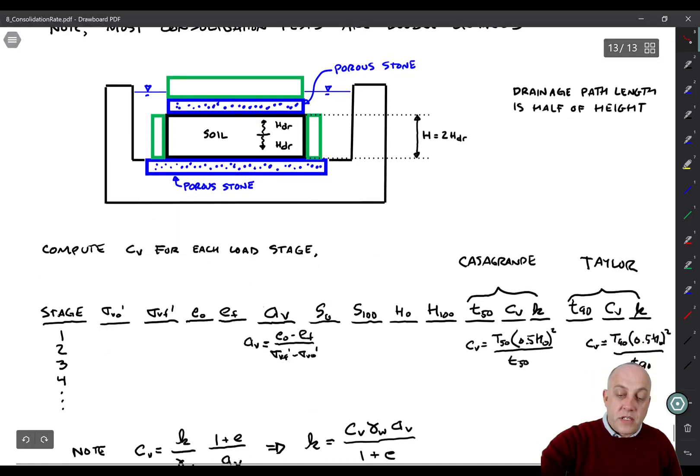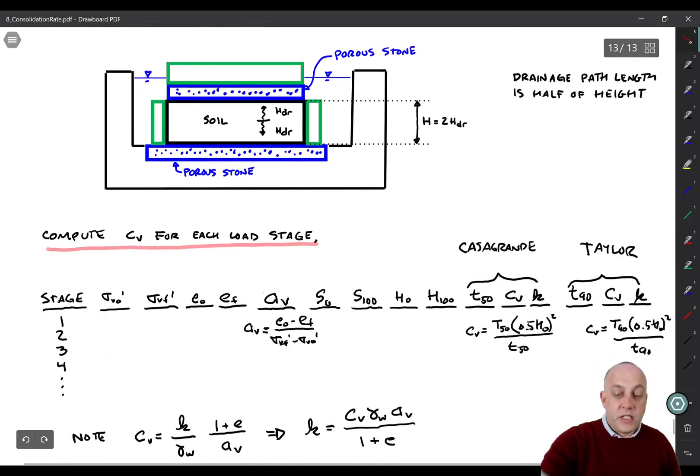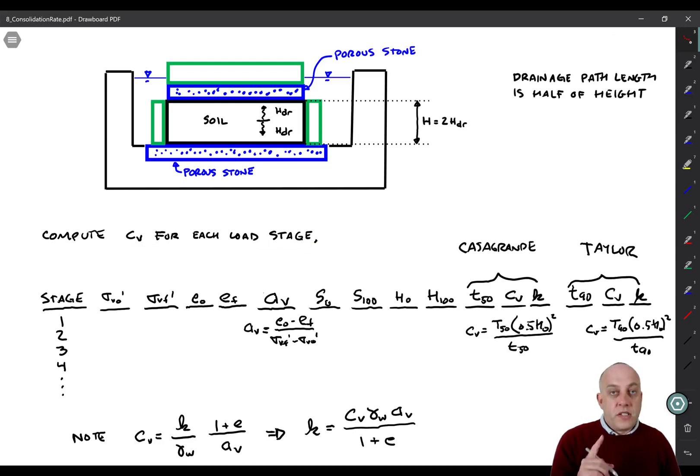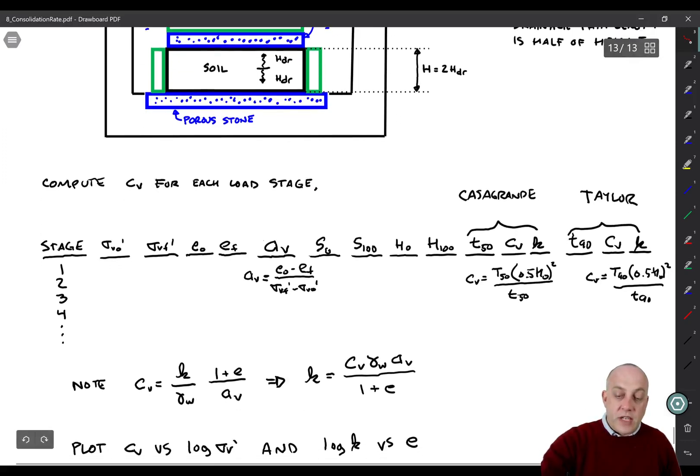Once we've done our laboratory tests, we can compute C sub V for each loading stage. Remember, we've done all this just for one stage, usually at nine or ten stages or maybe more than that. Here's a little table that I've set up where you might have the initial effective stress, final effective stress, initial and final void ratios. You can calculate then the coefficient of compressibility, A sub V. It's delta E over delta sigma V prime. Then you can get S0 and S100 after you've read them off of the chart. And for those settlement values, you can compute the heights, H0 and H100. What was the initial height? What was the final height at the end of primary consolidation?